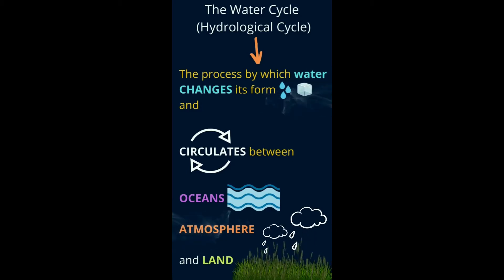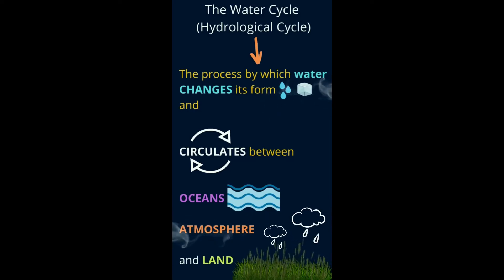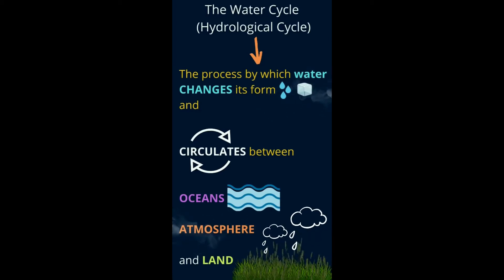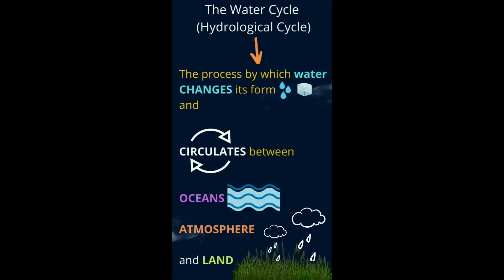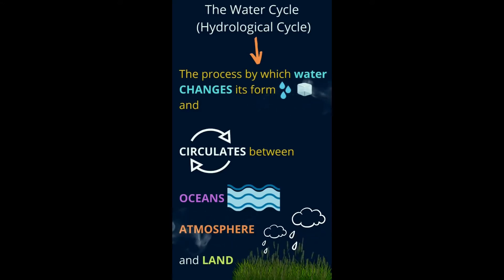Can you look at the picture? Can you see those drops? That's liquid form. And can you see the ice cube? That's solid. And can you see the steam? It's in gaseous form. So what is the water cycle? Water is changing from one state to the other — circulating between oceans, the atmosphere and land.